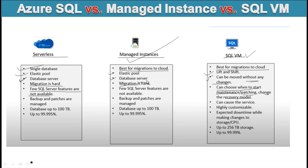For Serverless, backup and patches are managed, with a database size up to 100 TB and 99.995% availability. The same applies to Managed Instance — backup and patches are managed, database up to 100 TB, and 99.995% availability. For SQL VM, the service is highly customizable, but there is accepted downtime when making changes to storage or CPU. SQL VM supports up to 256 TB of storage, which is significantly more than the Managed Instance and Serverless options, with 99.99% availability.